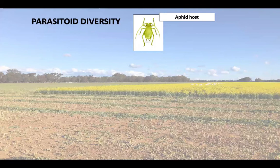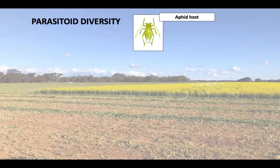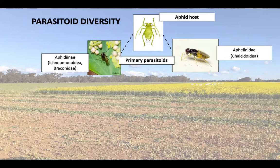The beneficial group I'm really interested in are the parasitoids. Parasitoids differ from parasites in that they kill their host during their development. The parasitoids I'm most interested in are wasps. In terms of aphids, you have your aphid host, then the primary parasitoids including the subfamily Aphidinae and the family Aphilinidae. They use a modified sting called an ovipositor to probe the aphid host and lay their eggs within the body — rather like Ridley Scott's 'Alien', the larvae feed on the inside of the aphid.